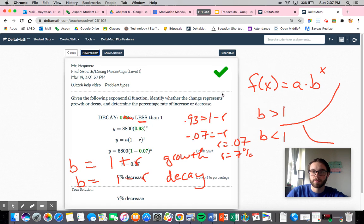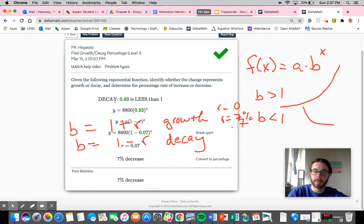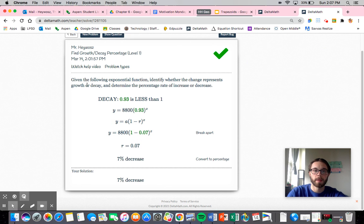And as you can see here, decay less than 1. 1 minus r has to ultimately equal 0.93, so that must mean that it's 0.07.